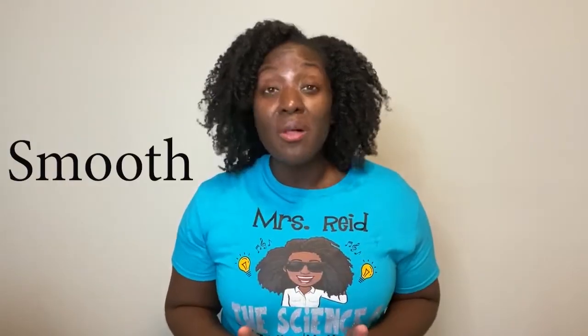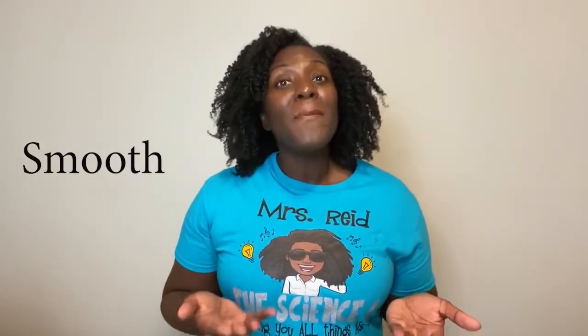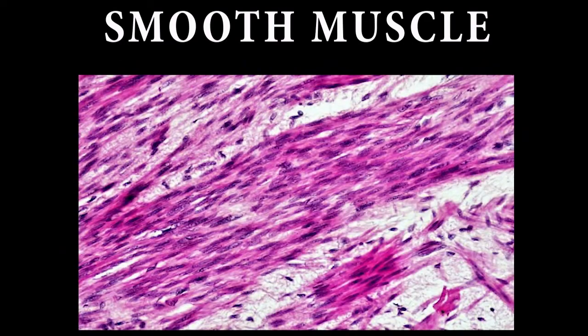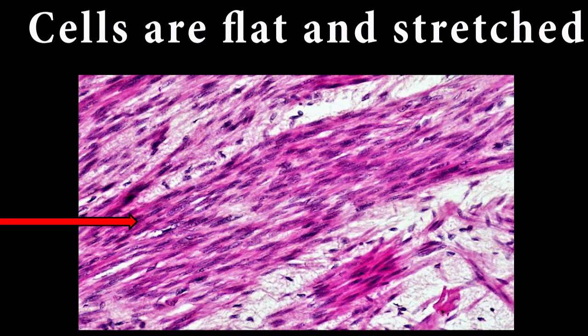The last thing that happened when I got scared is that my stomach started to hurt — that was due to smooth muscle that lines the walls of the stomach. I didn't have any control over that, so smooth muscle is under involuntary control, just like cardiac muscle. Smooth muscle is also found in the intestines and blood vessels. Under the microscope, notice there are no striations — that's why it's called smooth muscle — and the cells are flat and stretched out.